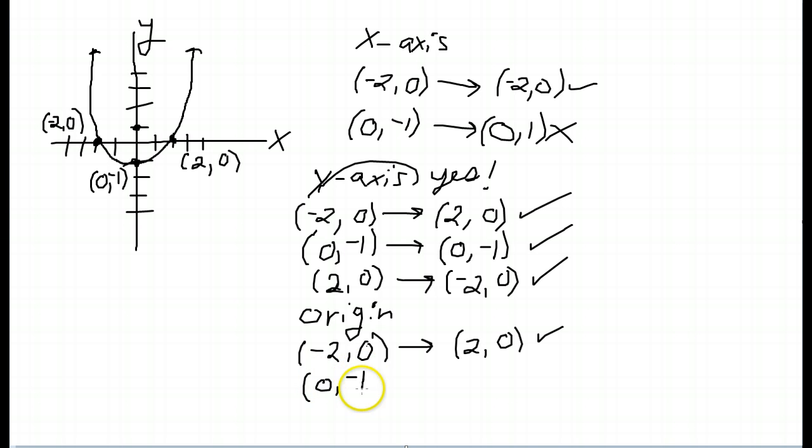So, 0, negative 1, when I change the sign of both, I get 0, positive 1. Well, 0, positive 1 is not on the graph. So, this one does not check out. So, it is not with respect to the origin. So, this is only symmetric with respect to the y-axis.